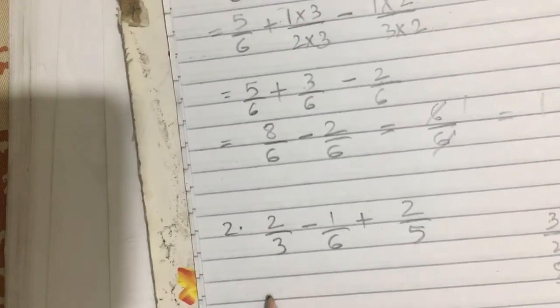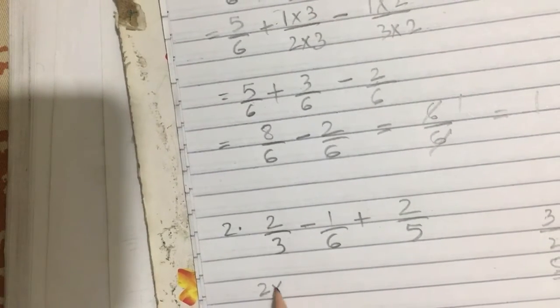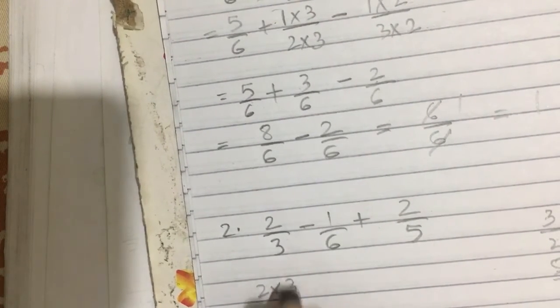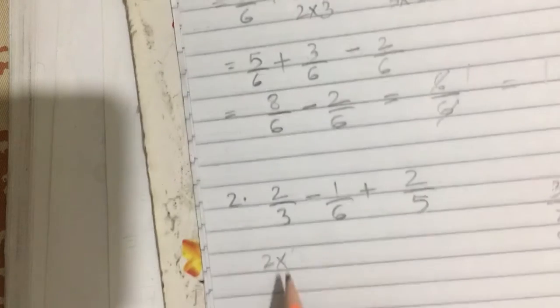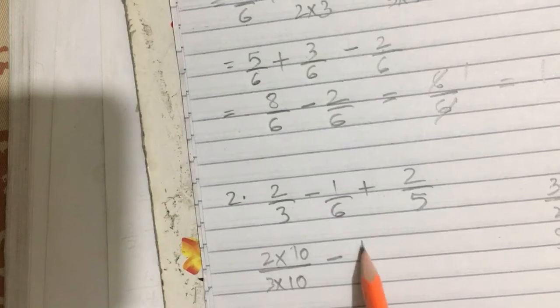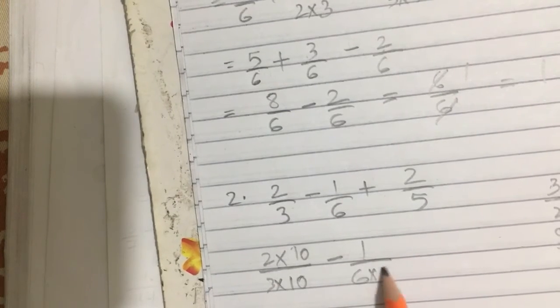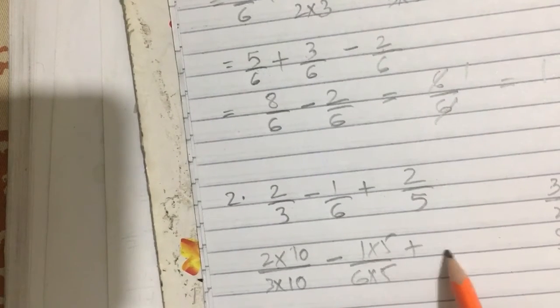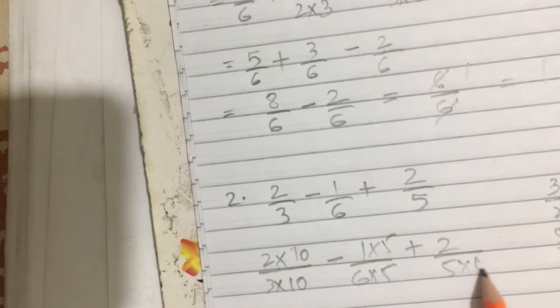Now, this is 3 multiply by 10 is equal to 30, minus 6 multiply by 5 is equal to 30, plus 5 multiply by 6 is equal to 30.